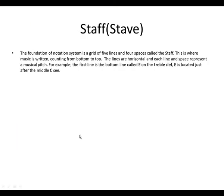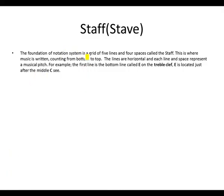Staff. What is a staff? The foundation of the notation system is a grid of five lines and four spaces called the staff. So a staff has five lines and four spaces. This is where music is written — where we write or notate notes from bottom to top. The lines are horizontal, and each line and space represents a musical pitch.